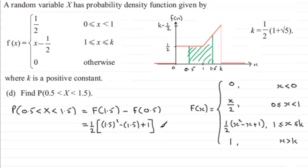And then we've got minus F of 0.5, which is 0.5 divided by 2. And if you work this out, you get exactly 5 eighths or as a decimal 0.625.